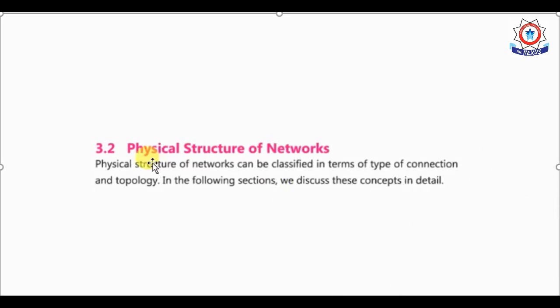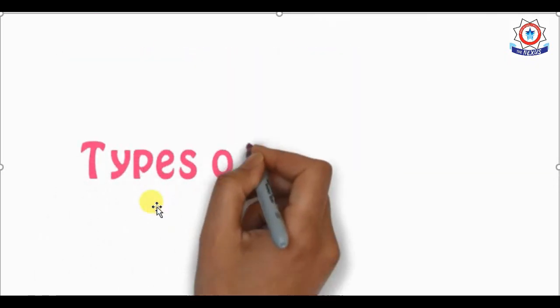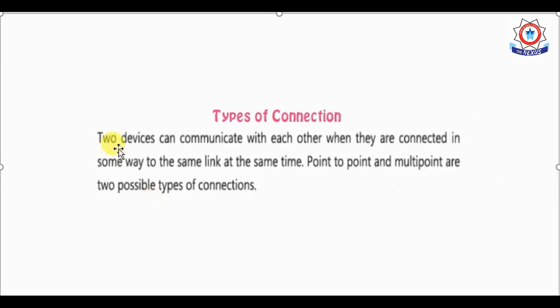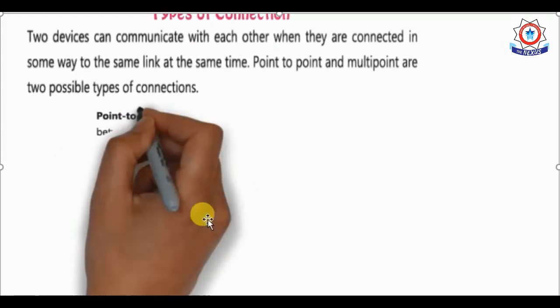Moving on to the physical structure of a network, we have a type of connection and topologies. The type of connection refers to how our computers communicate with each other. Two devices can communicate when connected to the same link. We have two types of connections: point-to-point and multipoint.